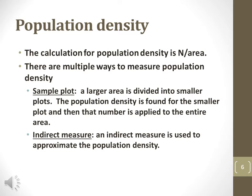Population density may be measured in several ways, including making a sample plot and indirect measurements. Sample plots involve the direct measurement of one or more areas and estimating the overall population density based on those measurements. Indirect measurements involve measuring some factors related to the number of organisms, such as dwellings, and estimating the number of animals found in each dwelling.